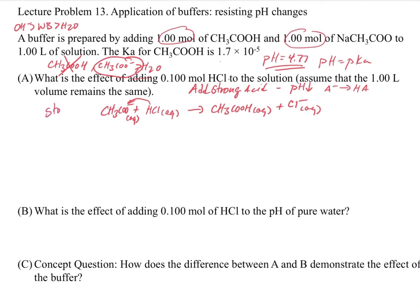Let's set up our stoichiometry table. We've got one mole of the acetate and one mole of acetic acid, and we're adding 0.1 moles of HCl. The limiting reagent is the HCl, because we have less HCl than acetate. So the HCl goes to zero. This is really important — because we have the acetate in there, it reacts with and eliminates the HCl. That's what makes a buffer a buffer.